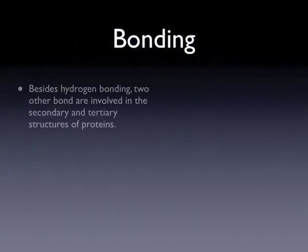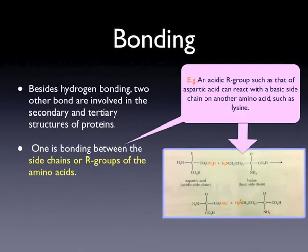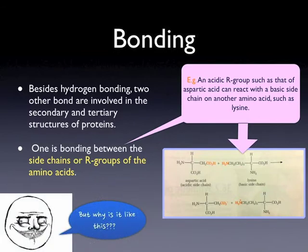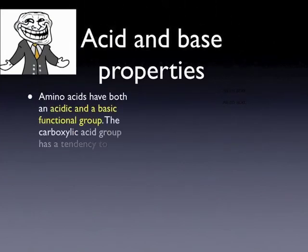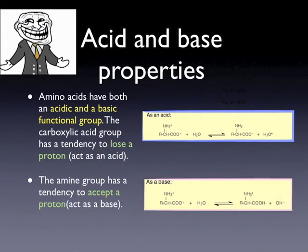Beside hydrogen bonding, two other bonds are involved in the secondary and tertiary structures of proteins. One is bonding between the side chains or R groups of the amino acids. For example, acidic R groups such as that of aspartic acid can react with the basic side chain of another amino acid such as lysine. This is because of the acid and base properties of amino acids — amino acids have both acidic and basic functional groups. The carboxylic acid group can lose a proton and act as an acid; the amine group can accept a proton and act as a base.